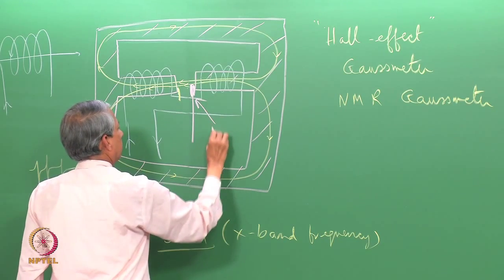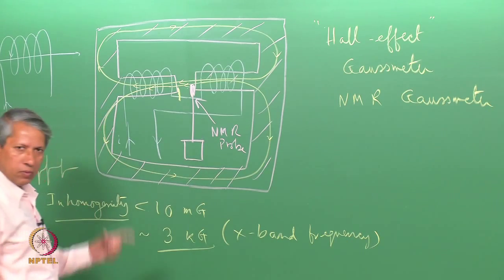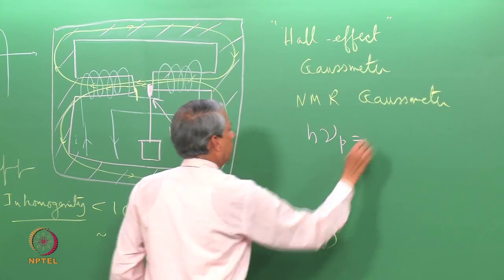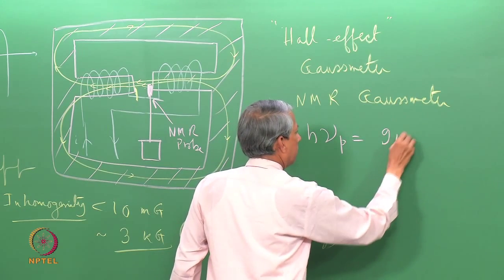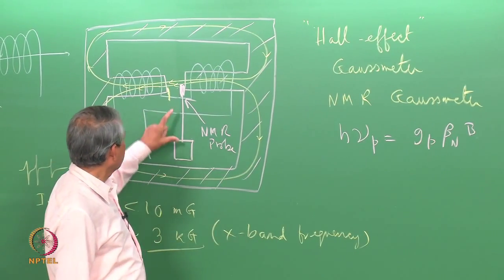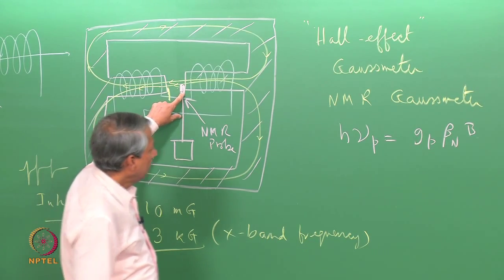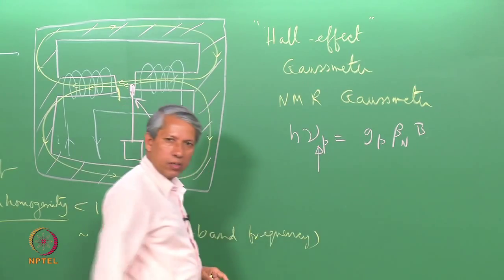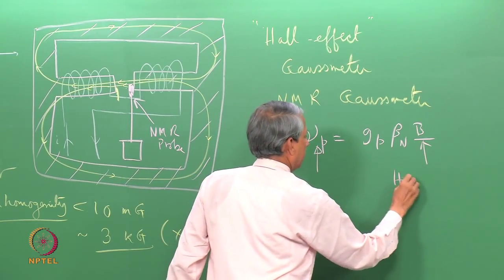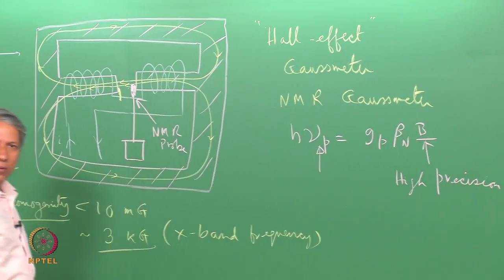If one needs this type of precision, one uses another technique which is based on NMR technique, an NMR gaussmeter. It is nothing but a very small NMR spectrometer. An NMR sample is kept very near, and the resonance condition for NMR, if proton NMR is used, is nu equals G of proton, Bohr magneton, and B of this magnetic field here. One looks at the resonance frequency of the proton sample kept here. The frequency can be measured very accurately with a high degree of precision, and from this and knowing G, one can find out B with high precision. That way the magnetic field can be measured.